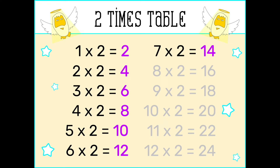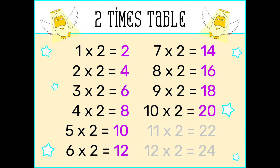Seven times two is fourteen. Eight times two is sixteen. Nine times two is eighteen. Ten times two is twenty. Eleven times two is twenty-two. Twelve times two is twenty-four.